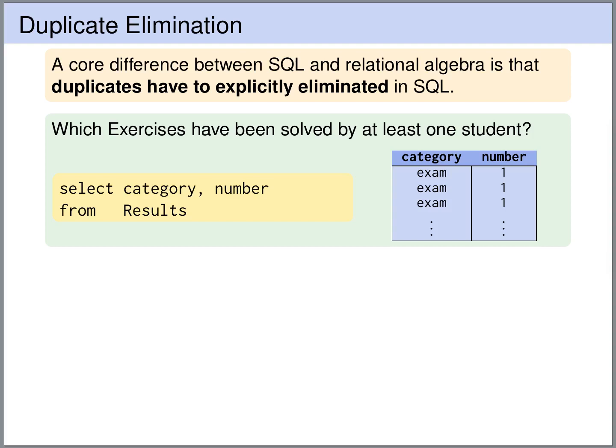For instance, imagine that we want to have the category and the number of all the exercises that have been solved by at least one student. We can get this information from the results table, and we simply select the category and the number from it. However, there are exercises that have been solved by multiple students. For example, the exam has been taken by three different students, so if we use this query, then exam 1 will occur three times in the result.